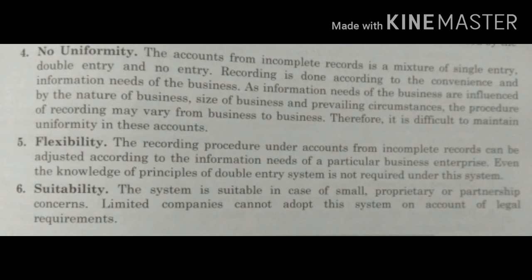Fifth feature is flexibility। इसमें जब हम double entry system के कोई rules regulation follow नहीं कर रहे और accounts की specific knowledge नहीं है, we are maintaining accounts as per our needs — so it is very flexible। जो लिखना है लिखो, जो नहीं लिखना ignore कर दो क्योंकि कोई stricter rules and regulations नहीं होते। Sixth feature is suitability: single entry system बहुत छोटे traders, proprietors, और partnership concerns के लिए suitable है जिनकी limited transactions हैं। इसके accounts legally valid नहीं होते क्योंकि सारी information record नहीं होती।